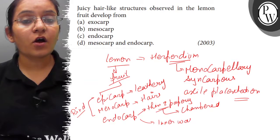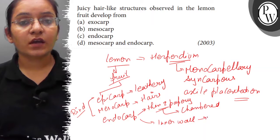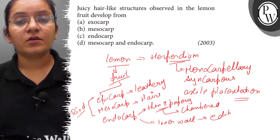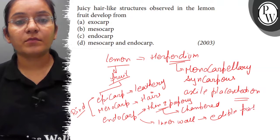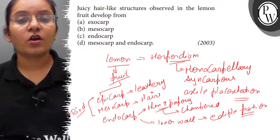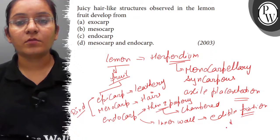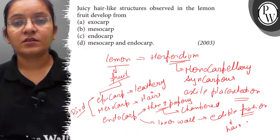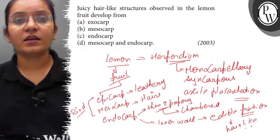Inner wall of Endocarp is the edible portion. The edible portion of the lemon is the inner wall of Endocarp that forms hair-like structures, juicy hair-like structures.